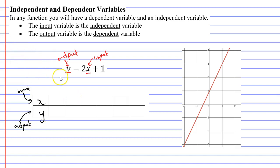It's important to note that it is possible to have x as your output variable and y as your input variable. If that was the case, it would probably be written something like this, x equals 2y plus 1. But for some reason, we always seem to pick x as the input variable.